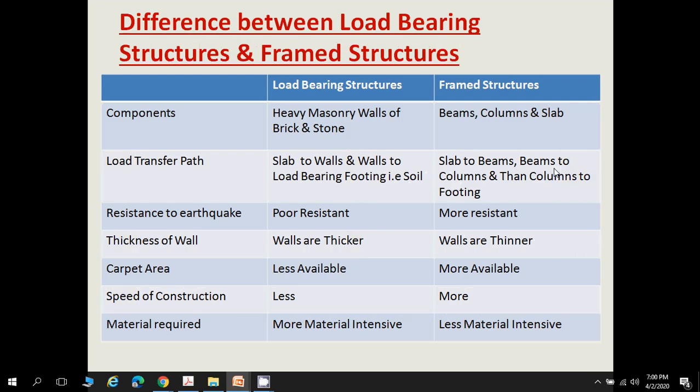In terms of components, load-bearing structures have heavy masonry walls of brick or stone, whereas framed structures have beams, columns, and slabs. For load transfer: in load-bearing structures, slab load is directly transferred to the walls and then to the load-bearing footing; in framed structures, slab load transfers to beams, beams to columns, columns to footing, and then to the soil.